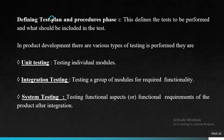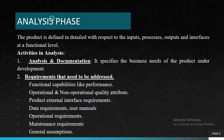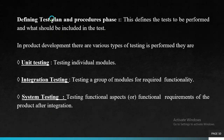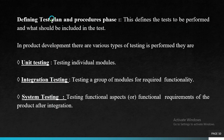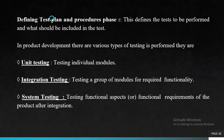Next, defining the test plan and procedure phase, which comes under the analysis phase. This defines the tests to be performed and what should be included in the test. In product development, various types of testing are performed, including unit testing, integration testing, system testing, and user acceptance testing. Unit testing means testing individually the modules — that is, testing each unit or module of the product independently for required functionality and quality aspects. Integration testing involves integrating each module and testing the integrated unit for required functionality. System testing involves testing the functional requirements of the product after integration testing.